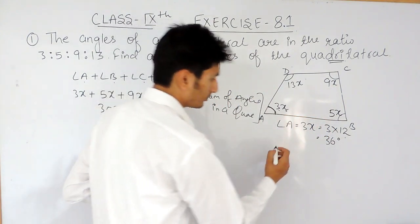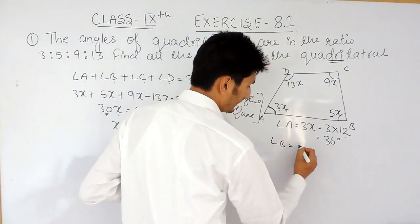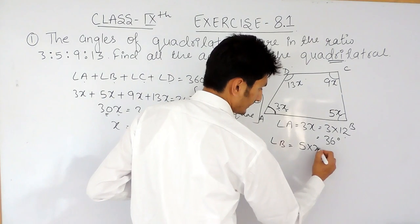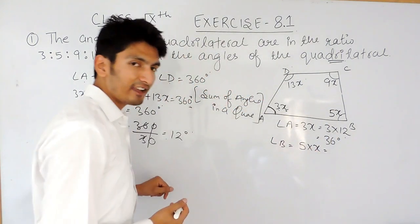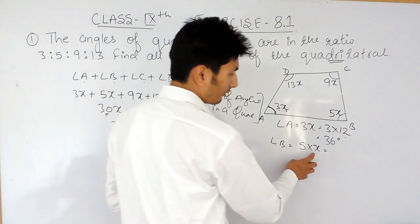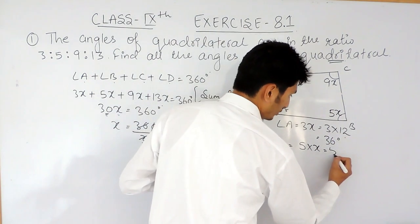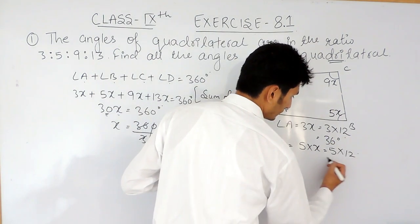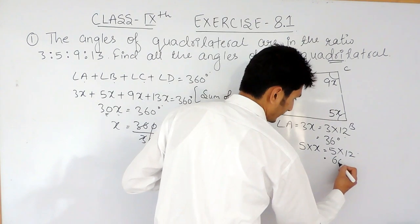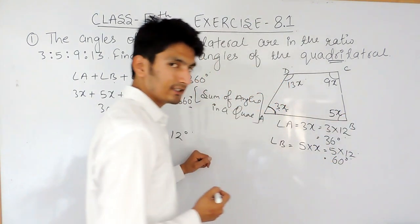Similarly, if you want to find the value of angle B, in that case, you have to multiply 5 with x and the value of x is 12. So, substituting the value, that will be 5 into 12. That is 60 degrees.